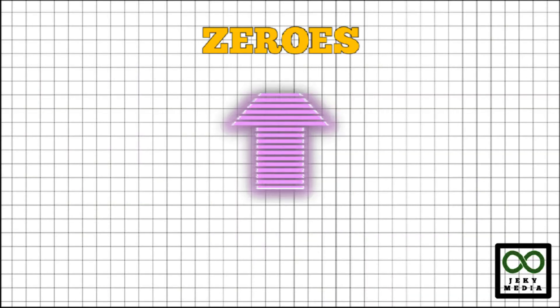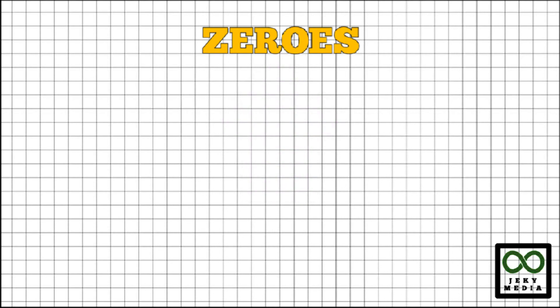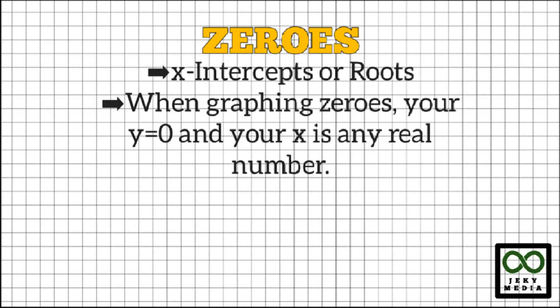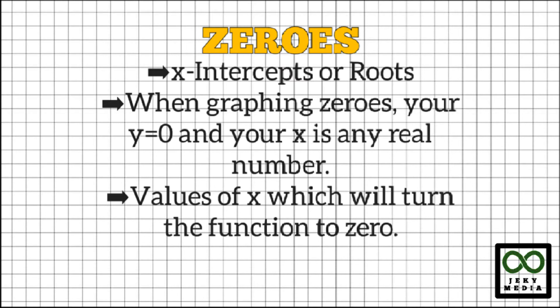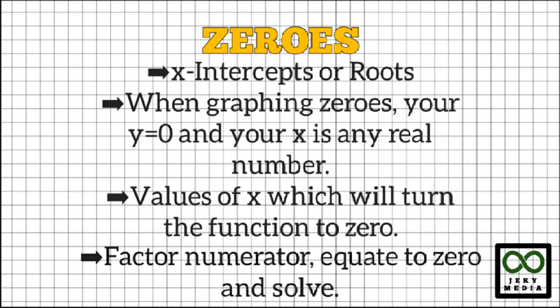The highlight in this topic is the zeros of a rational function. But what are zeros? Zeros are also the x-intercepts, or roots of a function. When graphing zeros, your y equals zero, and your x is any real number — could be negative, positive, or zero. These values of x will turn the function to zero. To find the zeros, factor the numerator, equate to zero, and then solve.